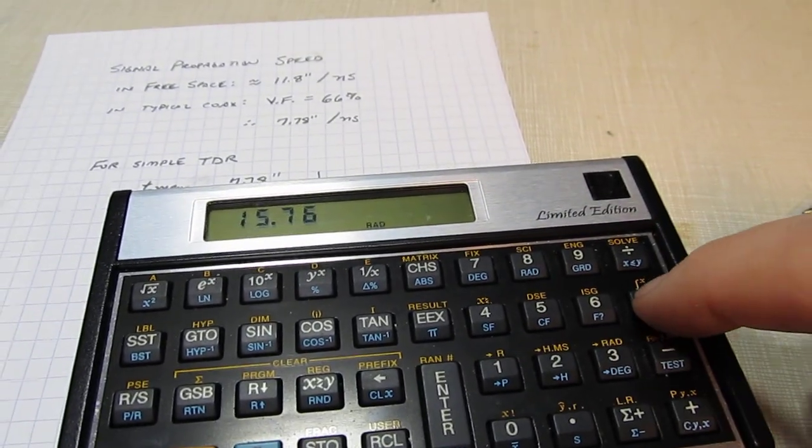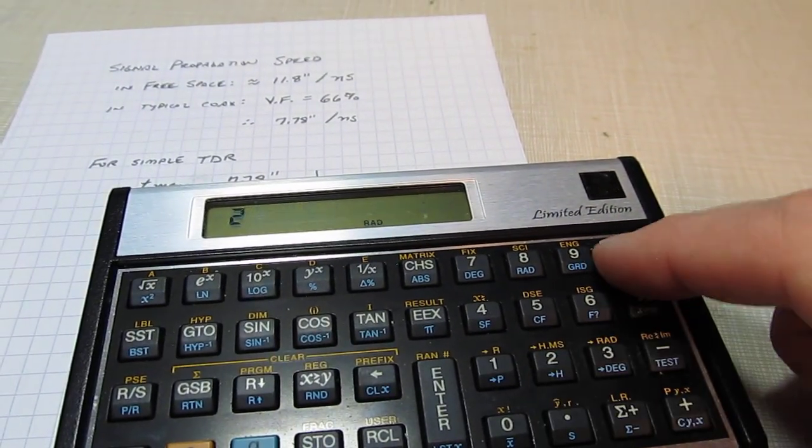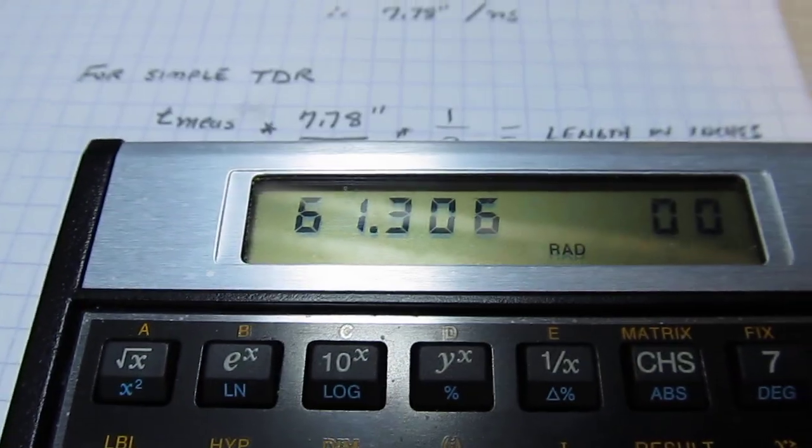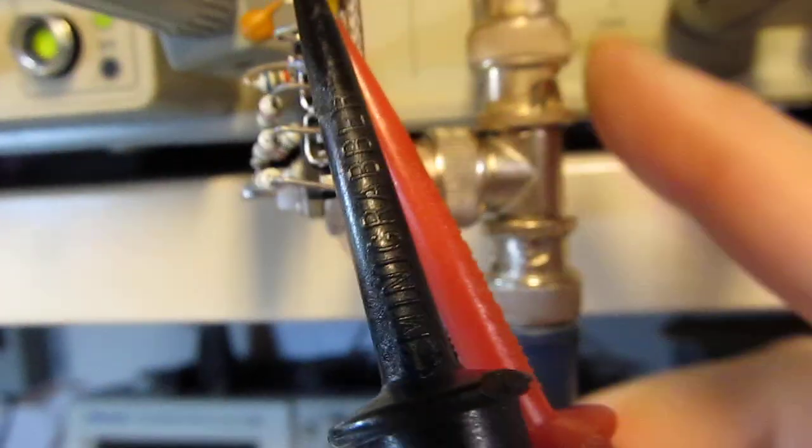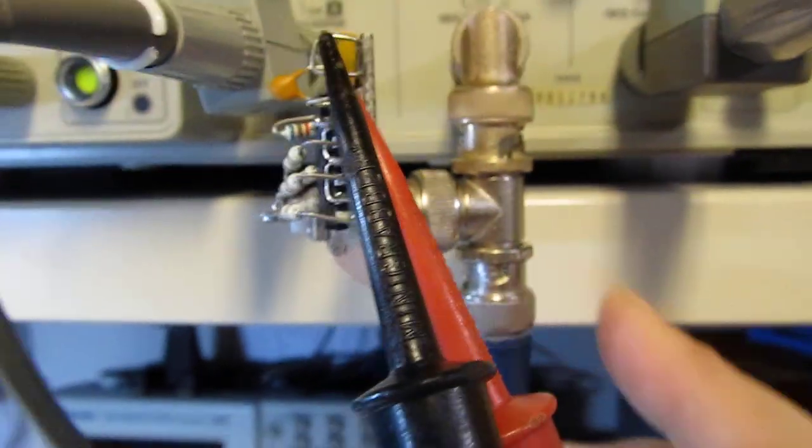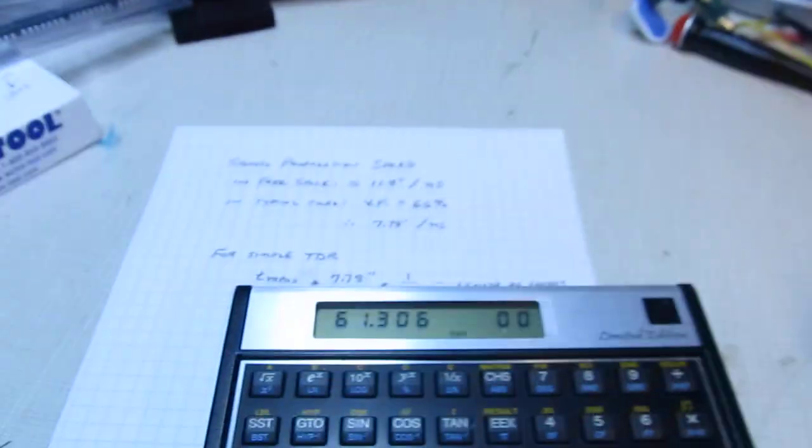We can see our length is about sixty one inches. This piece of coax is indeed basically a five foot piece of coax. That extra inch or so is most likely this extra inch in this connection here. That gives me precision down to a few inches or even maybe less than an inch if we're really careful.